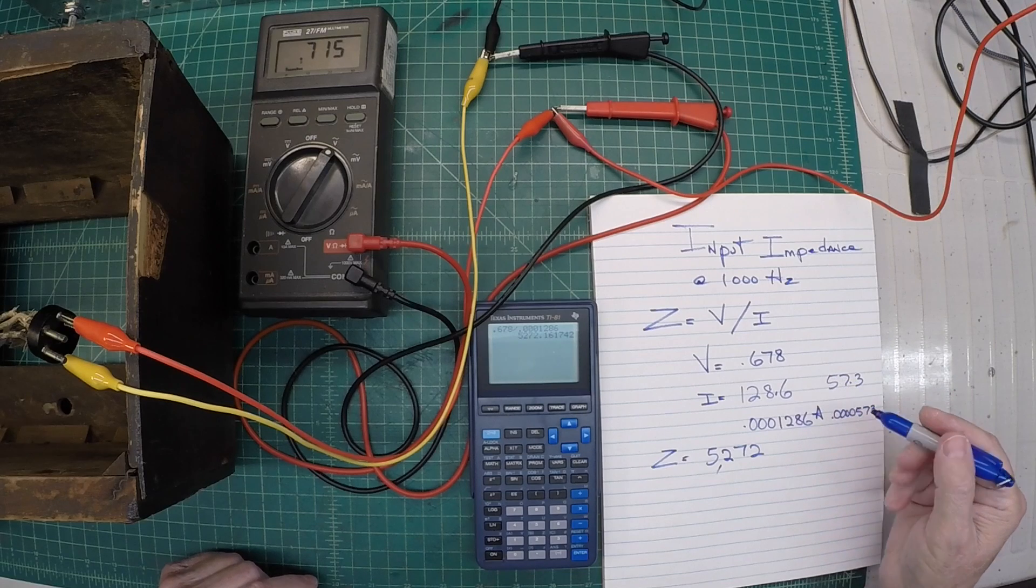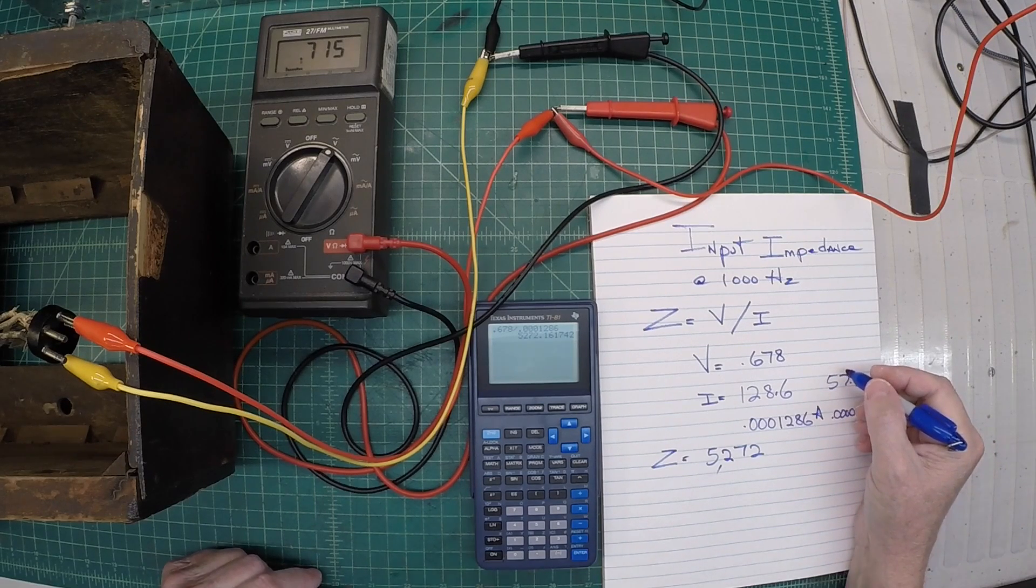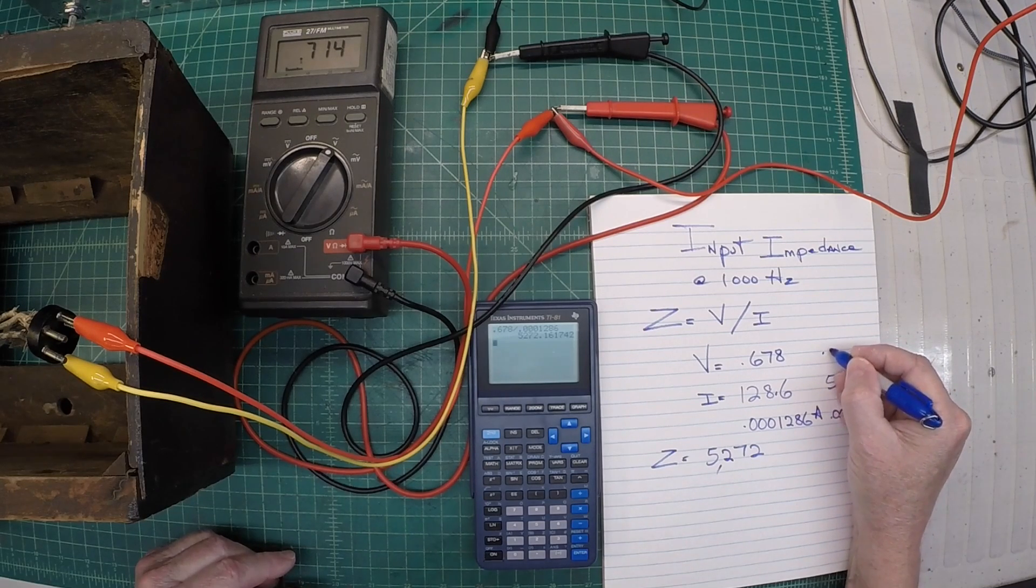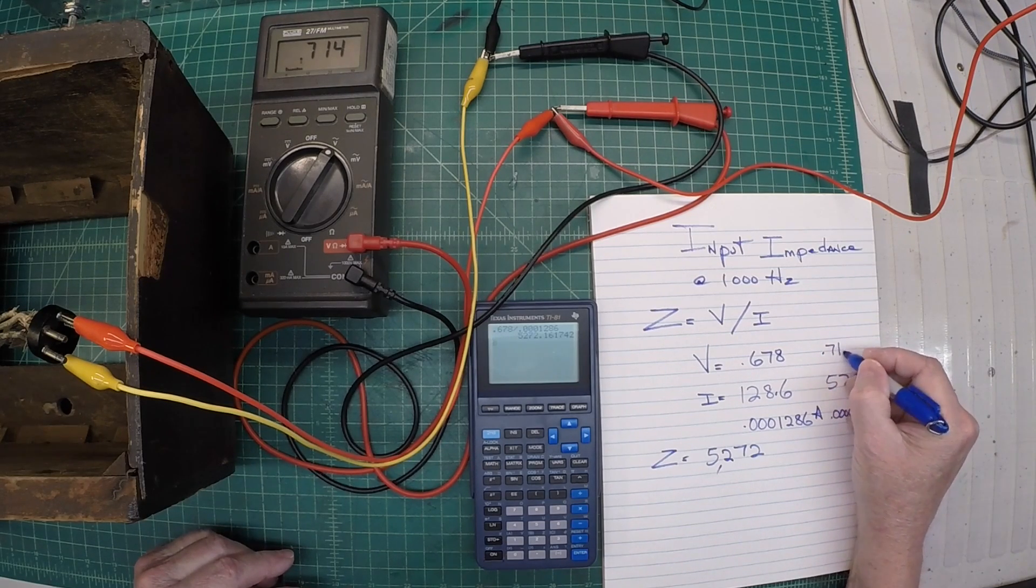All right, here's our AC voltage now, as it is impacted, of course, by the load itself. And we'll just note that at 0.714.